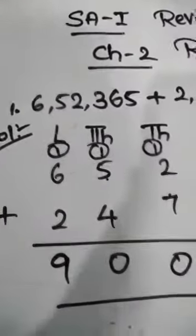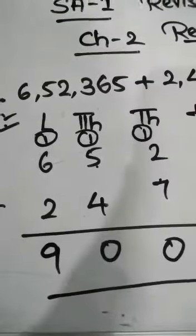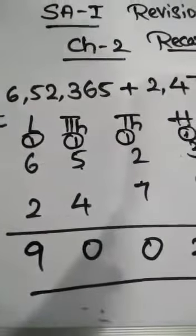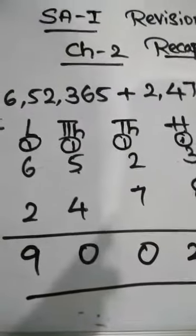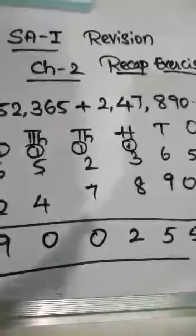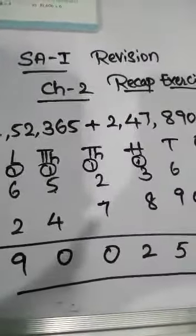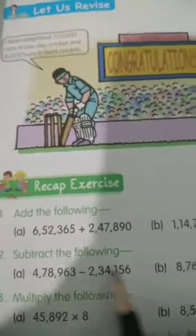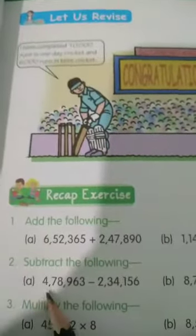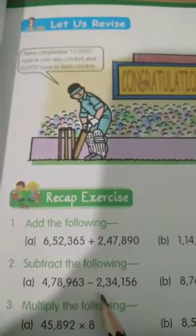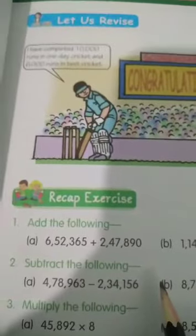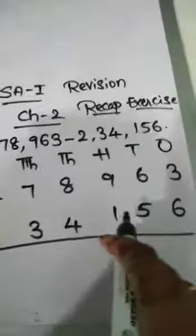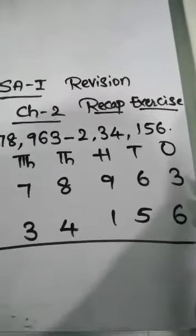So similarly, we have to do the remaining problems. You have to practice it. So remaining problems, you have to practice like this in your class work. Let us do the second bit: subtract the following. Here is the second bit — subtract the following. First question: 4,78,963 minus 2,34,156. So firstly you have to write like this and subtract the following.